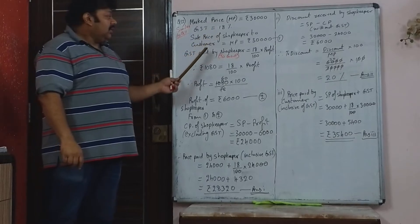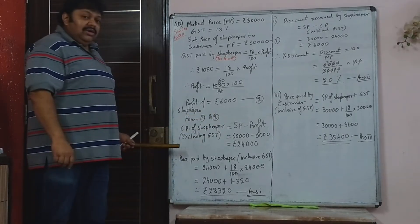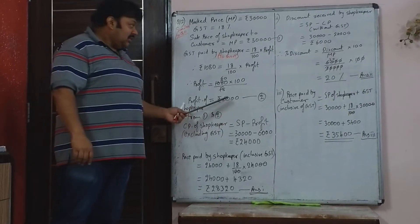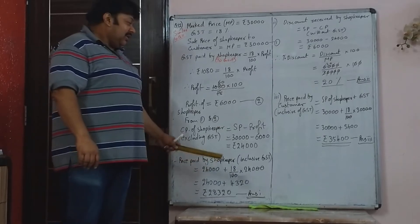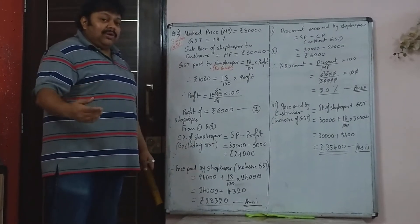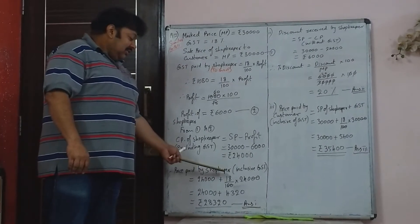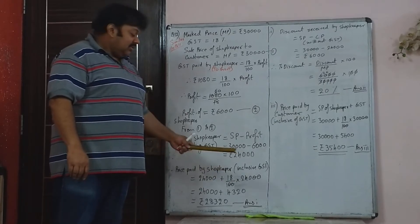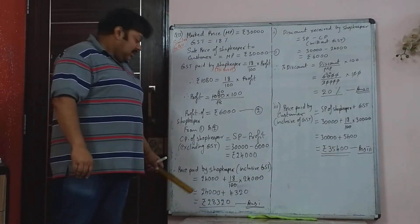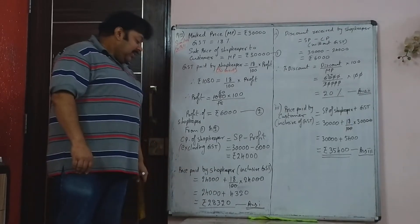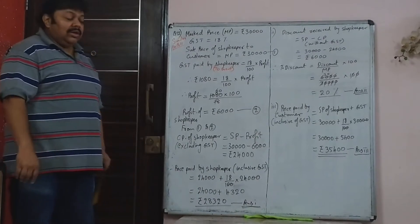Profit is Rs. 6,000 and sale price was Rs. 30,000, so shopkeeper's cost price excluding GST is Rs. 24,000. The price paid by the shopkeeper will not only be Rs. 24,000 — that was excluding GST. The invoice will also mention 18% of Rs. 24,000, that is Rs. 4,320. So the total price paid by the shopkeeper including GST is Rs. 28,320.